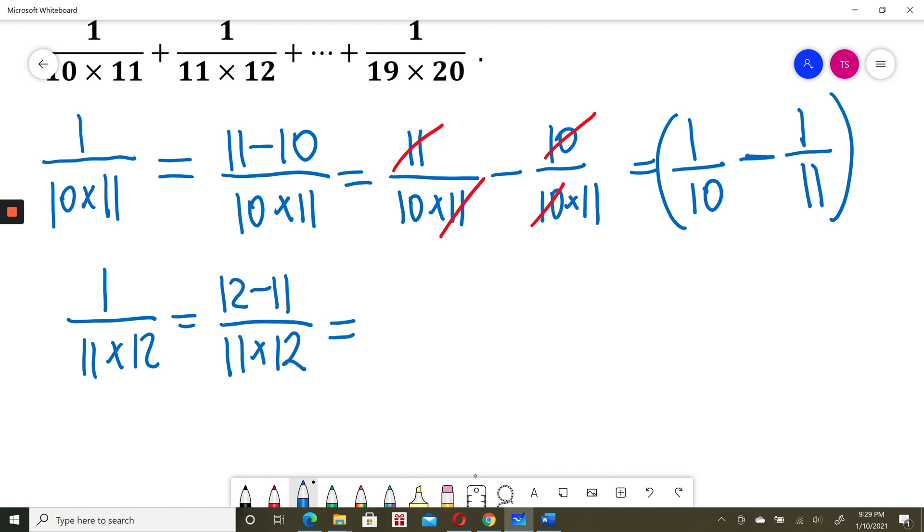And I can write it as 12 divided by the denominator minus 11 divided by the denominator. Now I will simplify 12's here and 11's here. So this is equal to 1 over 11 minus 1 over 12.